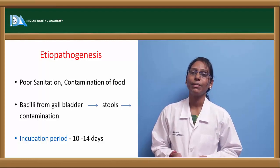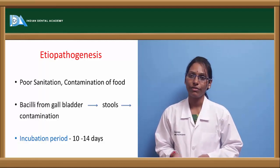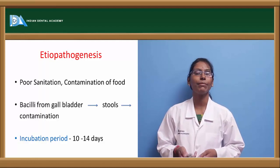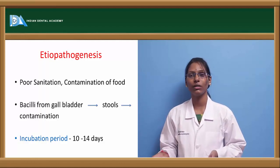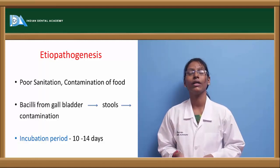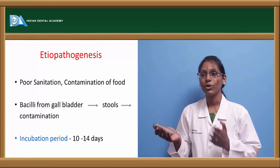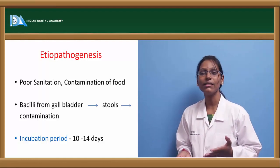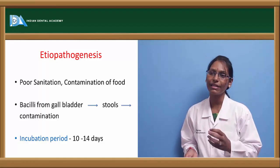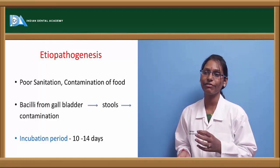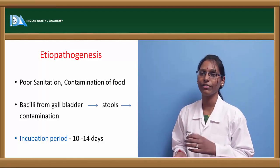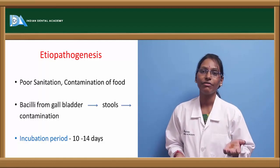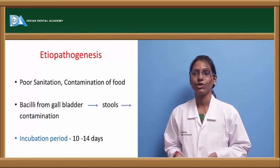The normal incubation period for enteric fever is about 10 to 14 days. Sometimes it may last for a longer period, and the progression is also very insidious — that is, it is slow in nature. To identify that it is enteric fever or typhoid fever, it probably takes about one week after the initiation of the fever.